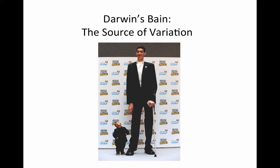Darwin recognized that offspring tend to resemble their parents but do not exactly resemble them, and so he observed that there was variation among populations. But at the time, the reason for that variation — the mechanisms behind that variation — were not well understood, and this is the problem that really kept Darwin awake at night.